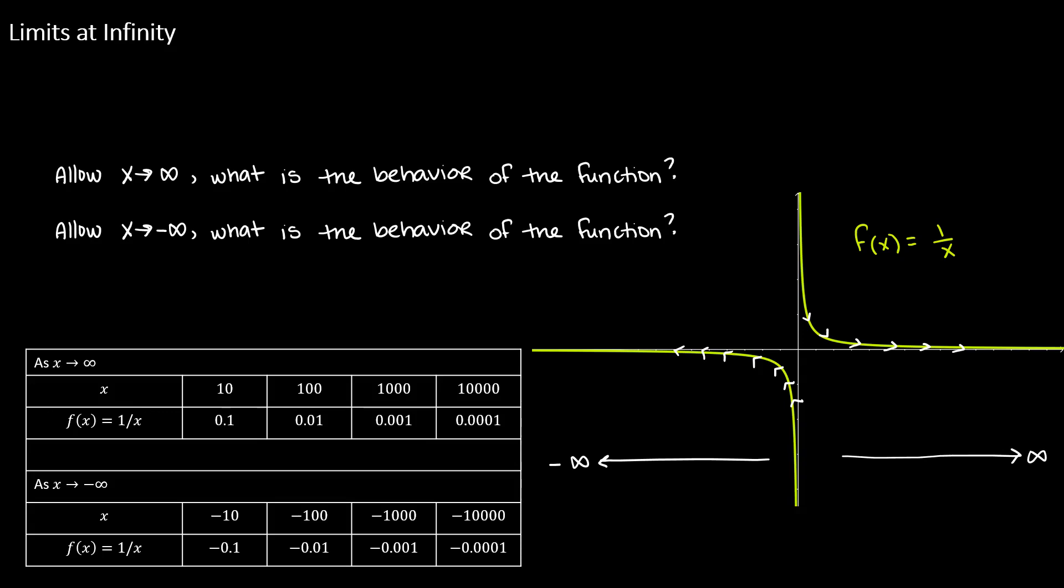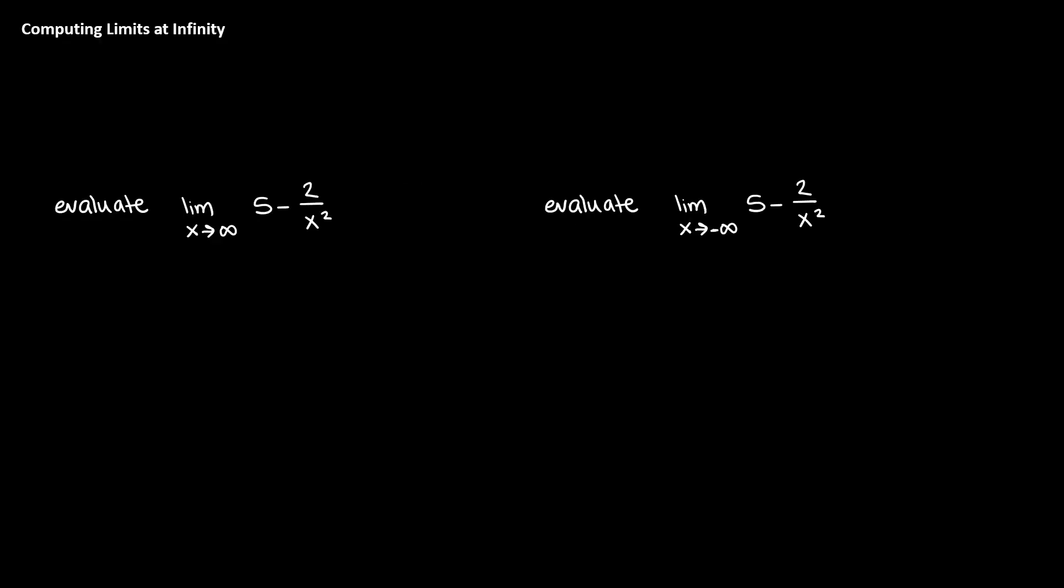Now that we know how the function 1 over x behaves as we allow our x to approach positive or negative infinity, we can evaluate limits that involve these terms. We're looking at the function 5 minus 2 divided by x squared. And we'd like to evaluate the limit where x goes to positive infinity, and then again where x goes to negative infinity. First thing that we want to do is rewrite our function so that we can see the 1 over x factor. So instead of 2 divided by x squared, we're going to rewrite that as 2 times the quantity 1 over x raised to the power of 2.